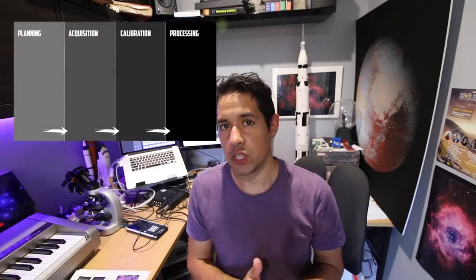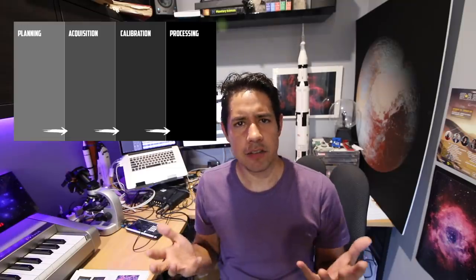G'day YouTube. I've taken a couple of cool photos recently and I'll show you those later with the Rasa 8. But before I do, this video is going to be all about workflow. I'm going to step through my workflow which can be broken down into four discrete categories: Planning, Acquisition, Calibration and Processing. Now these categories really apply to anyone and any industry and any type of endeavor.